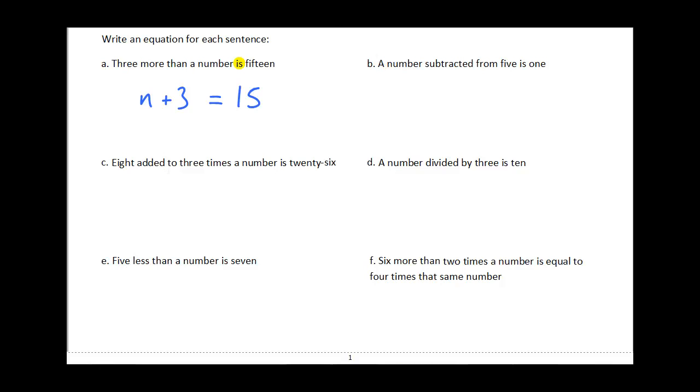Another example here: a number subtracted from 5 is 1. Again, 'is' is really our equal sign. I'm going to just write my equal sign. Well this is really easy on this side—I've got 'is 1' so that's just going to be a 1 there. And on the other side, a number subtracted from 5—that means 5, and I'm going to subtract from that a number, in this case maybe I'll use x.